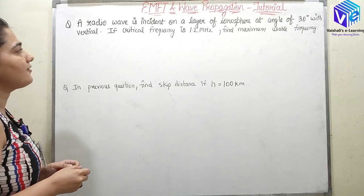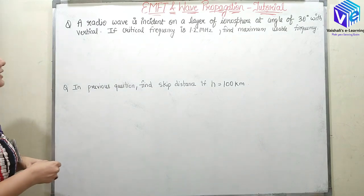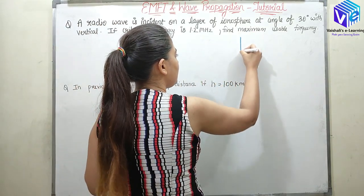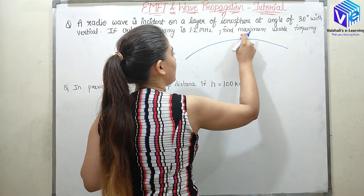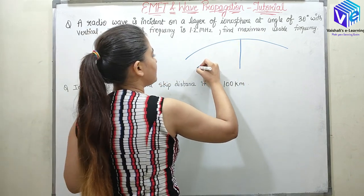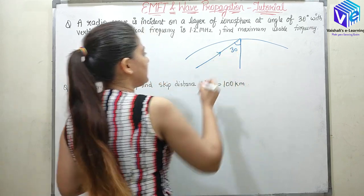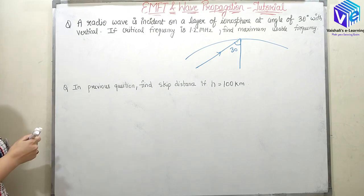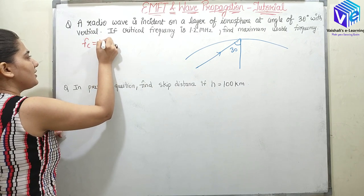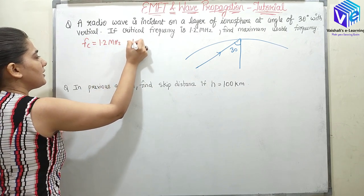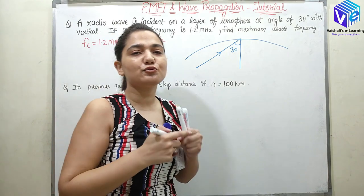It states a radio wave is incident on a layer of ionosphere at an angle of 30 degrees with vertical. So if this is my vertical, the radio wave is incident on the ionosphere at an angle of 30 degrees. The incident wave is making 30 degrees with the vertical. If critical frequency is 1.2 megahertz, Fc is given as 1.2 megahertz, which means 1.2 × 10^6 hertz. Find maximum usable frequency.